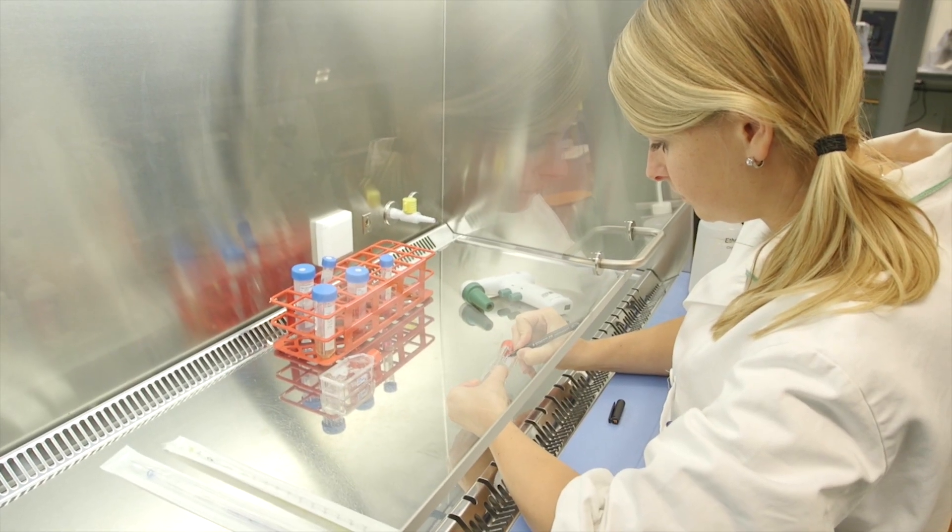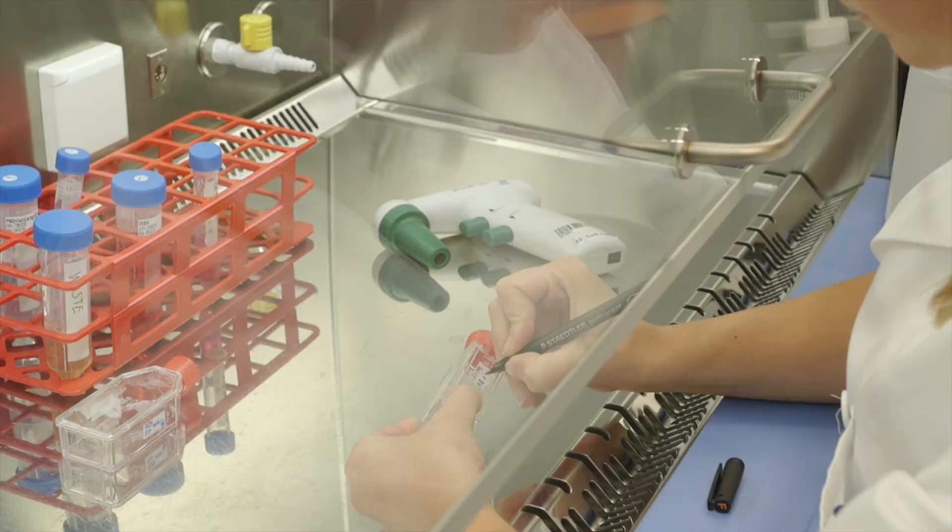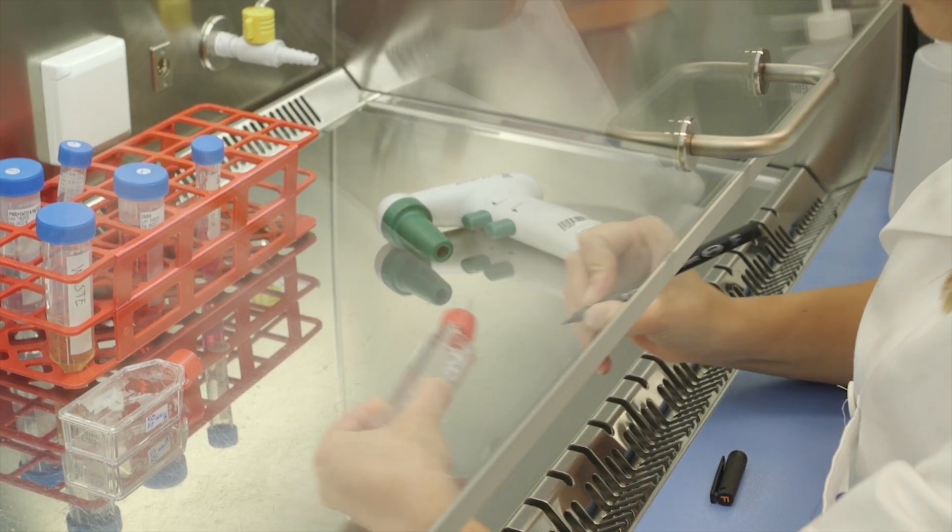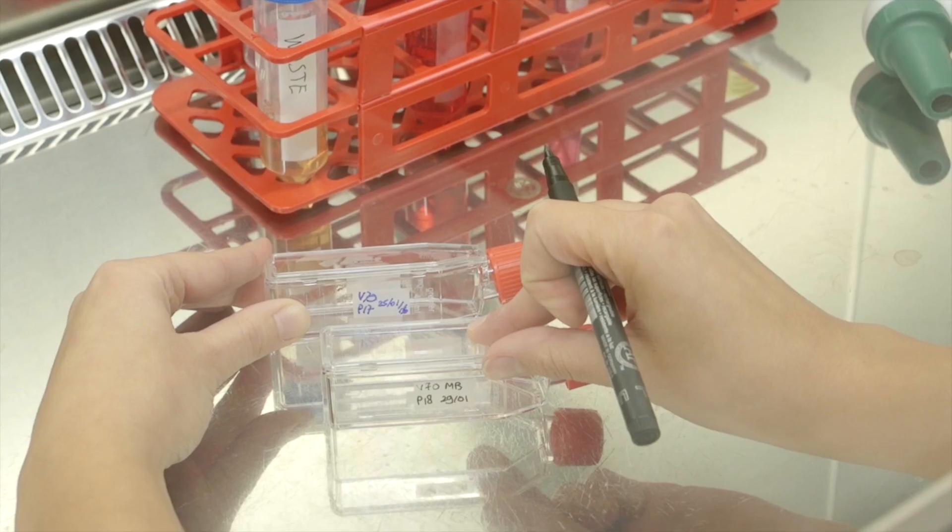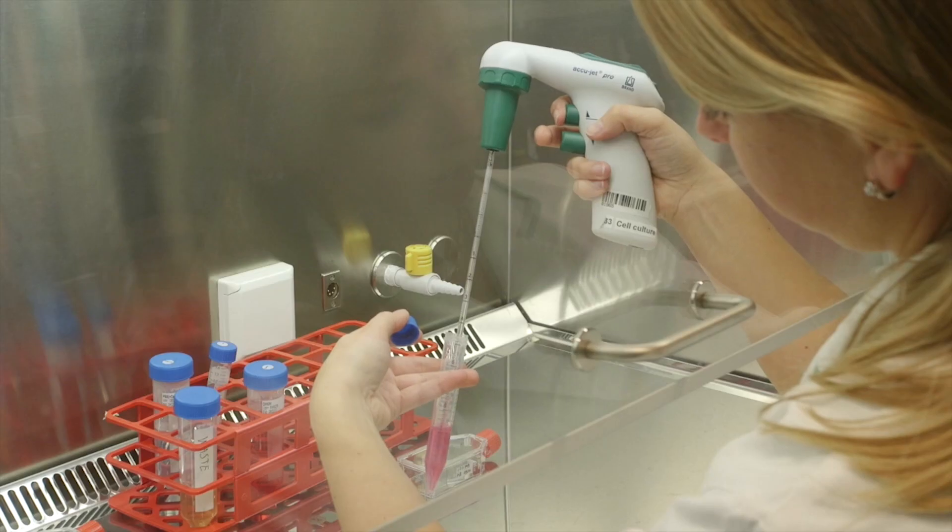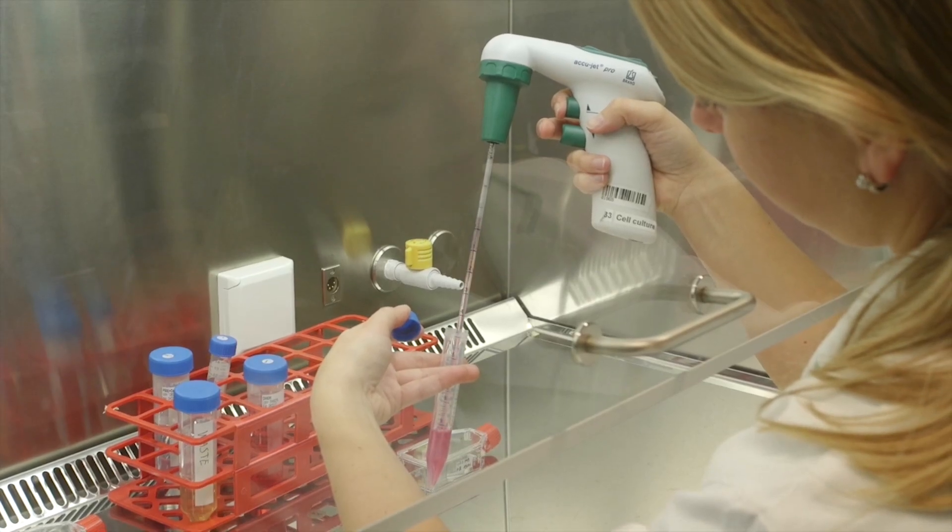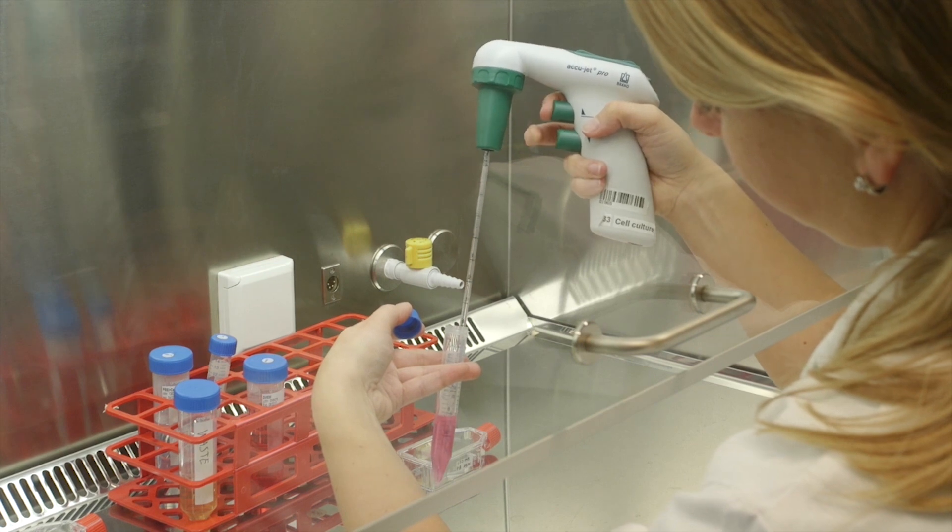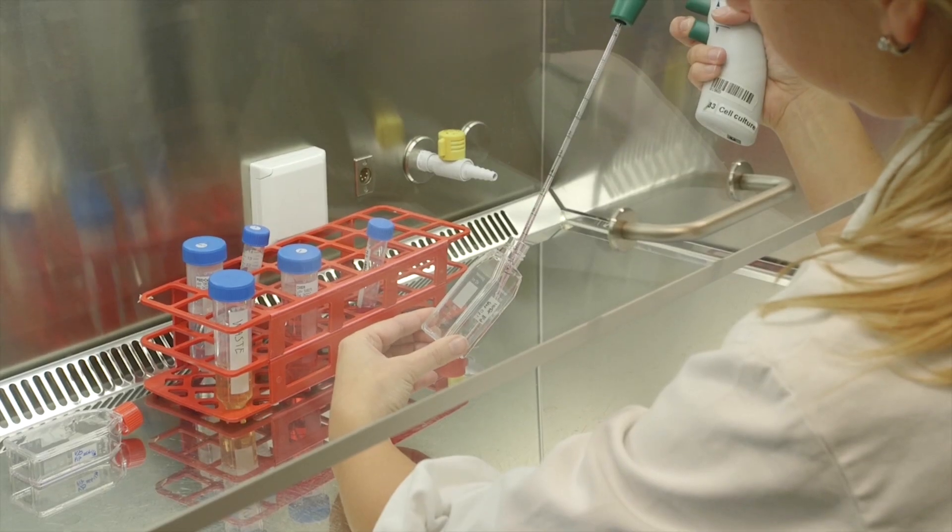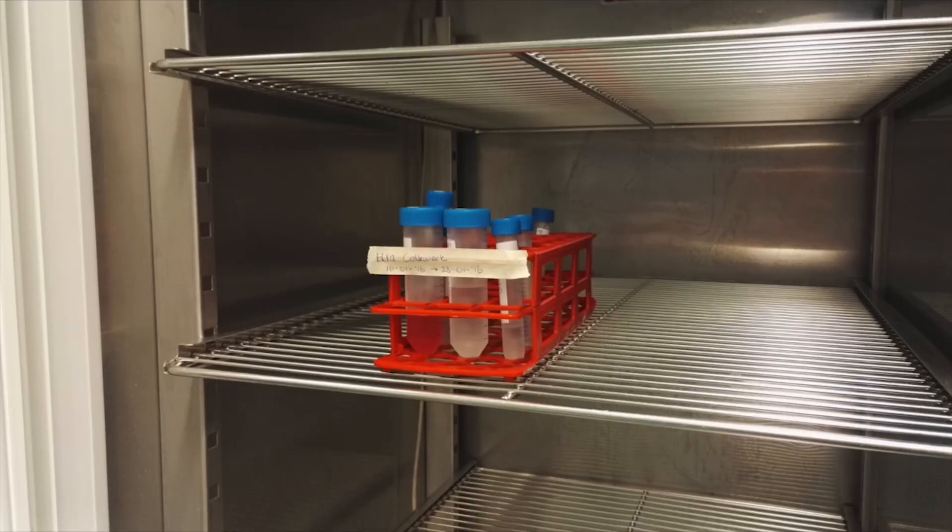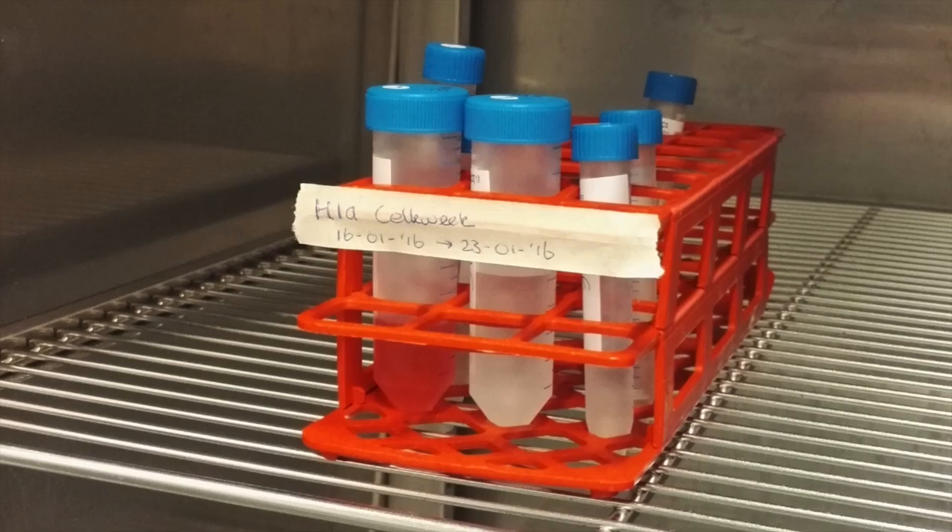Once you have calculated how the cells should be subcultured, you can label a new flask with the identifying information, including the passage number increased by 1. Resuspend your cell suspension and transfer the required amount into a new culture flask. Add the required amount of medium. Make sure all tubes with media and PBS are well labelled and put them in a labelled rack per class in the refrigerator.